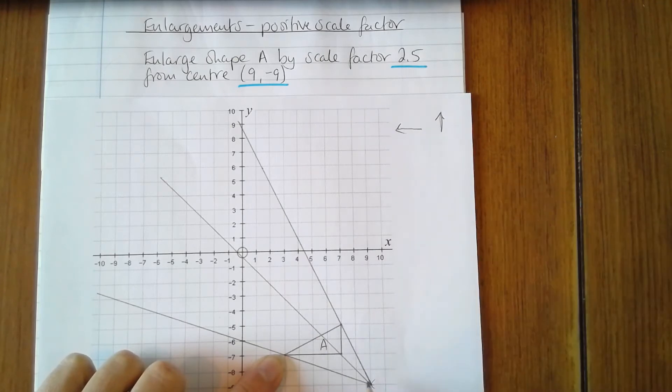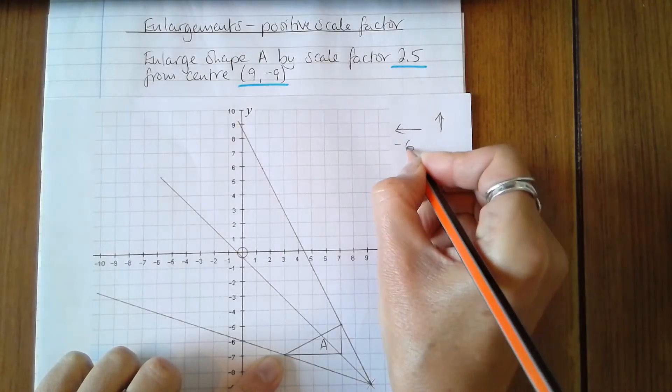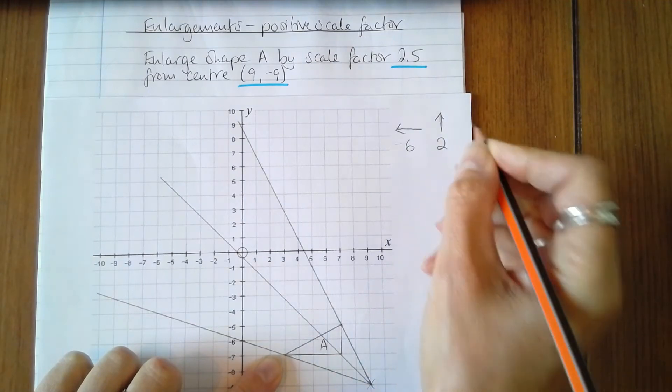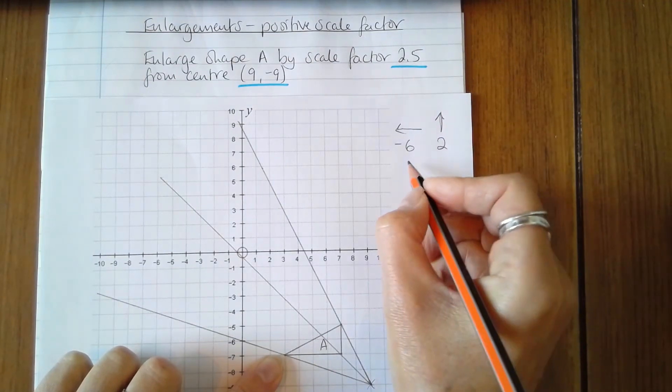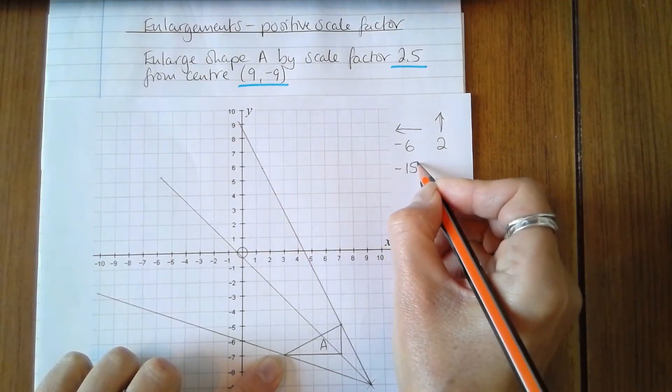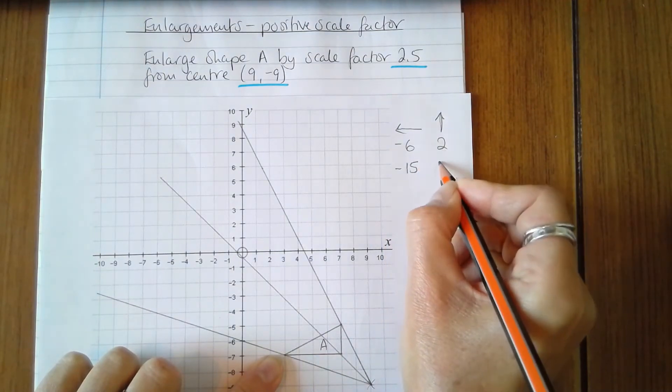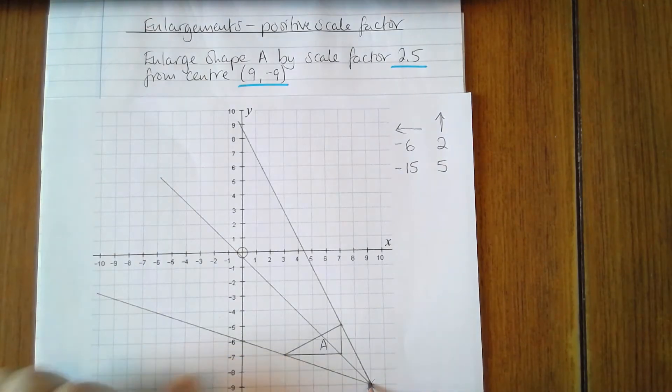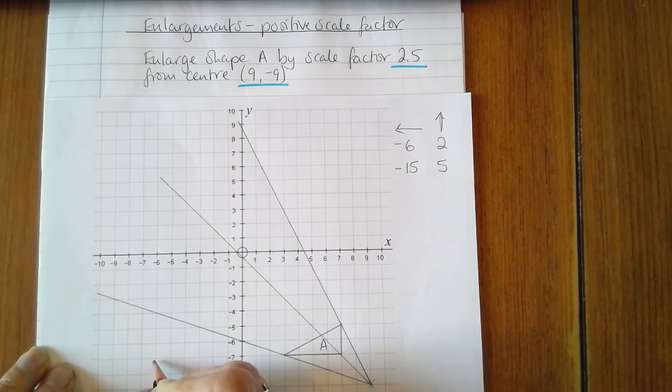So the first vertex is 6 across and 2 up, so 6 to the left which is -6, and 2 up. Multiplying those by 2.5 gives -15 and 5. So the new vertex will be 15 to the left and 5 up: 3, 6, 9, 12, 15, and 1, 2, 3, 4, 5 - bang on the grid line, so I'm confident that that's correct.